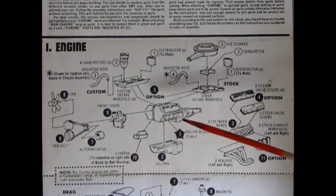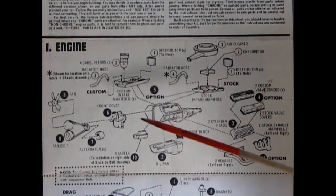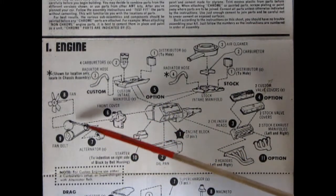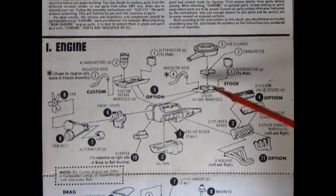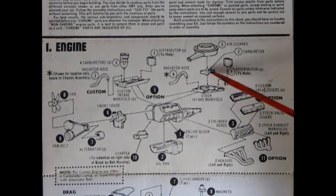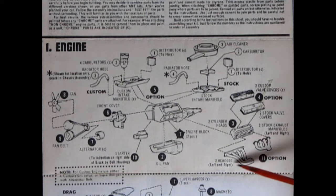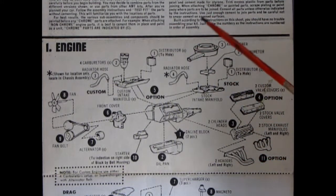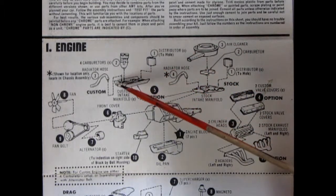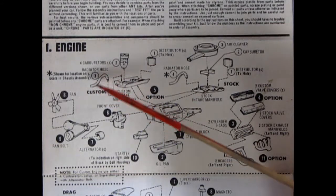Here's the engine block. We have right and left hand side with the transmission molded on. An oil pan, the starter motor, the front timing cover, the alternator, fan belt, fan, intake manifold, radiator hose, distributor with the shield, the carburetor, air cleaner, valve covers. You get a choice of custom or stock. The cylinder heads, the stock exhaust manifold, the custom manifold. And then for the custom we have the distributor, the intake manifold, four carburetors, and the radiator hose.